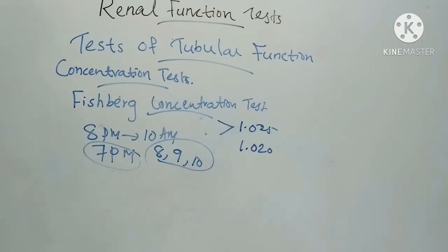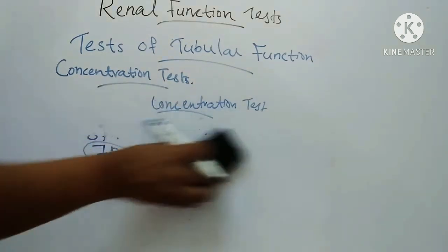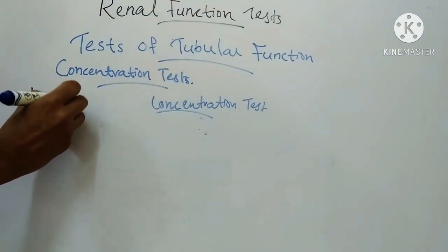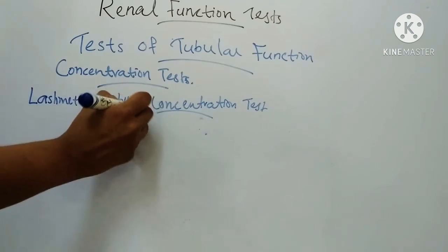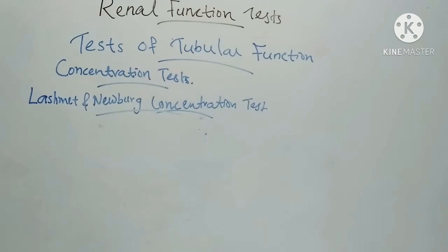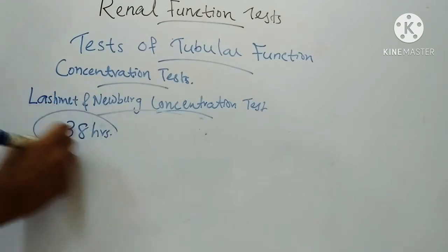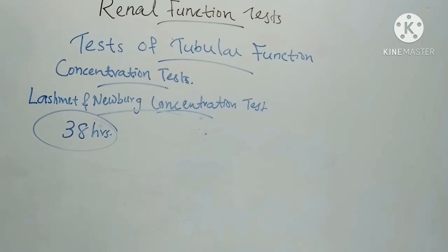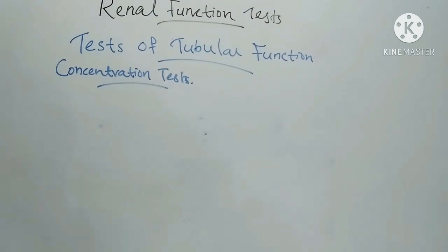A false result may be obtained if the patient has congestive cardiac failure or diabetes. That is the Fischberg concentration test. The next one is the Lashmet and Newberg concentration test, which is done by severe fluid intake restriction over a period of 38 hours. It also involves the use of a special dry diet for one day.